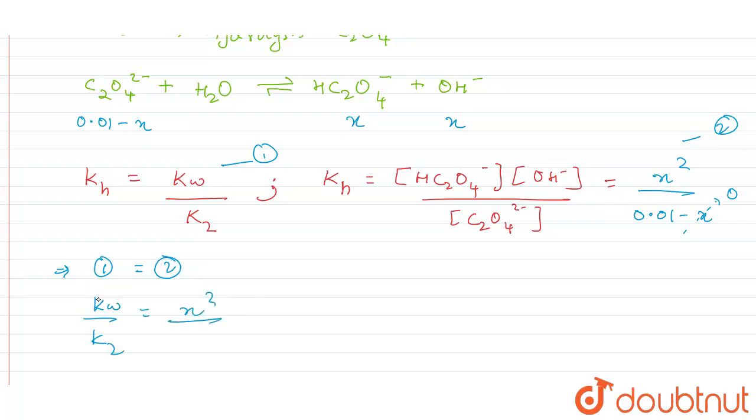From this we can easily calculate the x² value. It is Kw, Kw value is 10⁻¹⁴ multiplied by 0.01, the whole divided by K2.